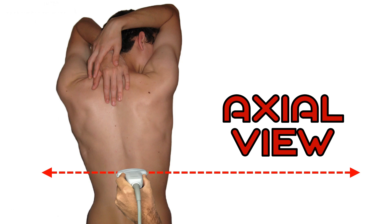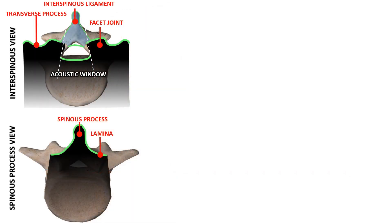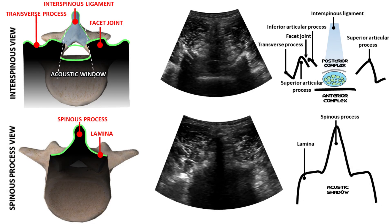Axial view. In the axial view, we should be able to identify two different patterns along the lumbar spine. Placing the probe directly above the spinous process, we can visualize it as a hyperechoic structure with laminae on either side. In this view, due to the hyperechogenicity of the bone, the structures beneath the spinous process are not visualized. Moving the probe slightly cephalad or caudad, the interspinous ligament is then visualized. Because the echogenicity of this ligament is less than the spinous process, other neuroaxial components will be visible. Scanning at this level will reveal the facet joints and the transverse processes on either side of the midline as hyperechoic structures.